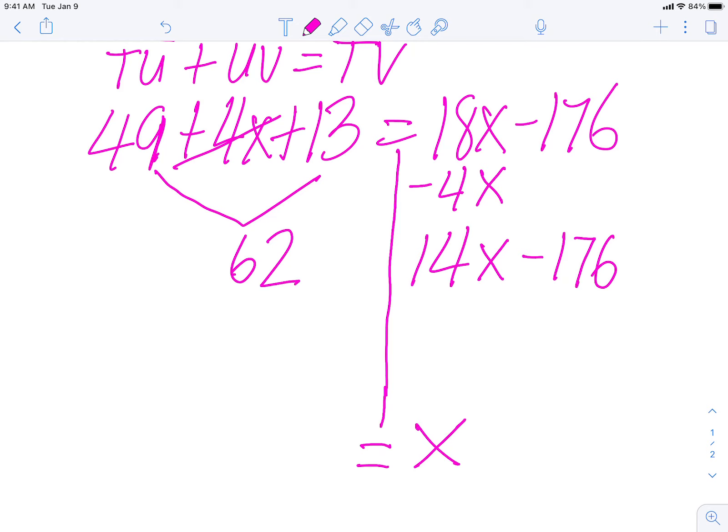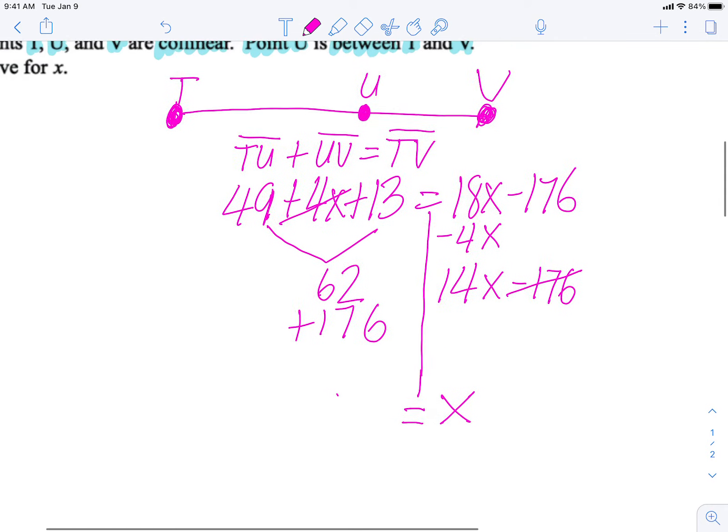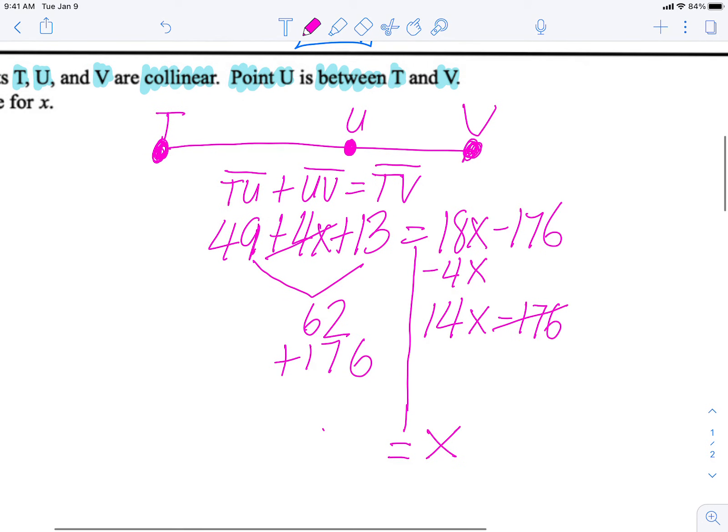So that means that I need to bring this minus 176 over this way. So I'm going to cross out minus 176 and I'm going to add 176. So using my calculator, I'm going to say 62 plus 176 is equal to 238.